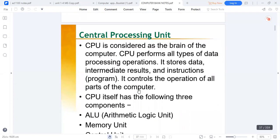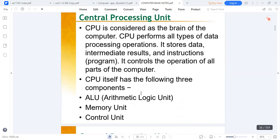The central processing unit is considered the brain of the computer. It performs all types of processing tasks by storing data, processing data, and controlling operations. It has three key parts: the CPU itself, which has all three elements.